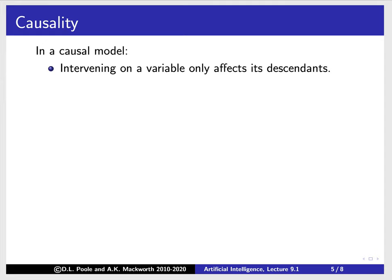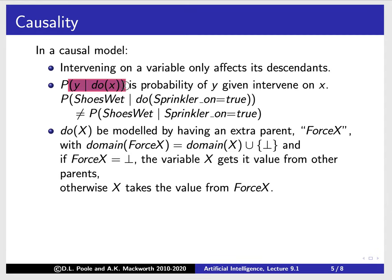In a causal model, intervening on a variable only affects its descendants — we only go downhill, not backward as we did when reasoning in a belief network. We define the probability of Y given do(X) as the probability of Y given that we intervene on X. In particular, the probability of shoes being wet given do(sprinkler is on) — given you turn the sprinkler on — is different from the probability of shoes being wet given that you've observed the sprinkler is on.